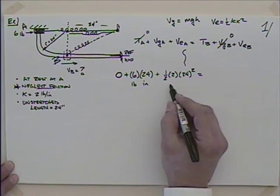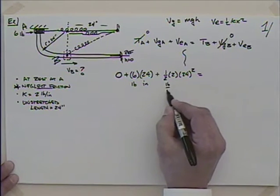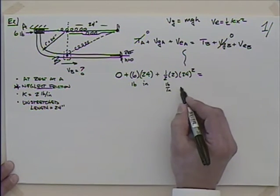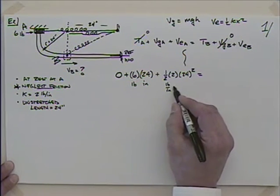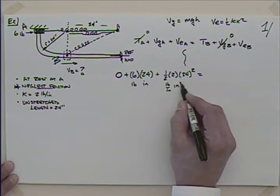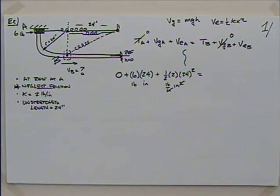Taking care of the units: that 2 is pounds per inch, and the 24 squared is inches squared, so those cancel and I get pound-inches. I think we're okay on units so far.